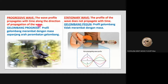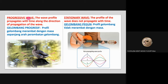For the stationary wave, the profile of the wave does not propagate with time. For example, if you play a guitar, the wave will stay there — even if it vibrates, it will vibrate at the same place and will not move. For the progressive wave, you can see the movement of the wave, like when you throw a stone in the water. That is the difference between the progressive wave and the stationary wave.